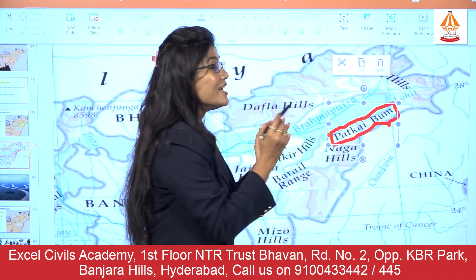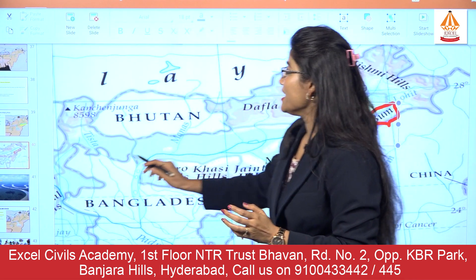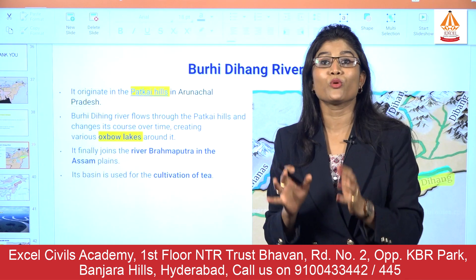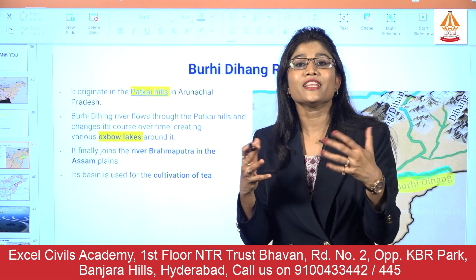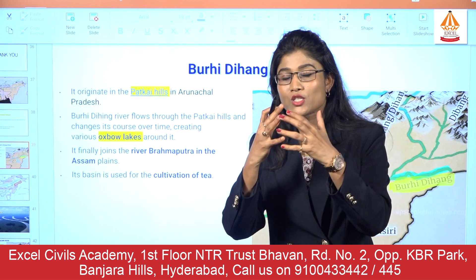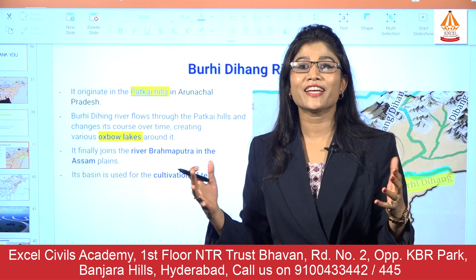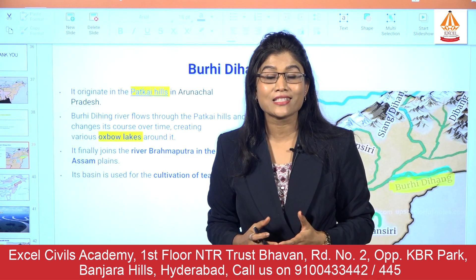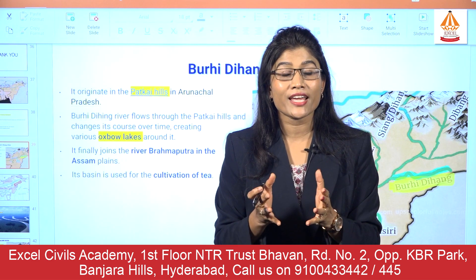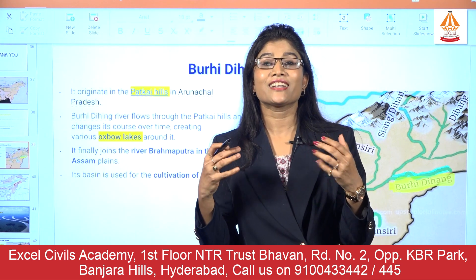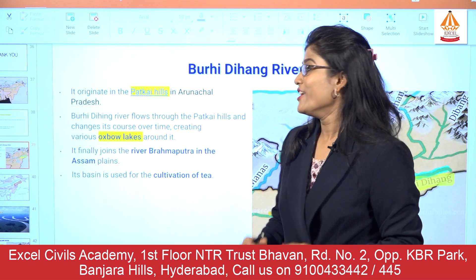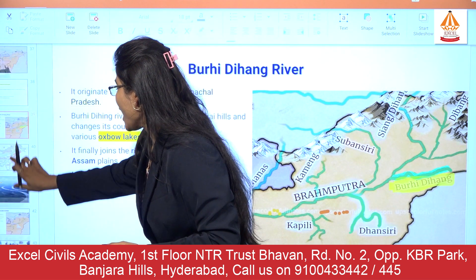The Buri Dihang river flows to the northwestern direction and confluences with the river Brahmaputra in the region of Assam. An important feature of this river is that it forms many oxbow lakes. In the northeastern states, many rivers are creating beautiful geographic features like rapids, meanders, oxbow lakes, and gorges.